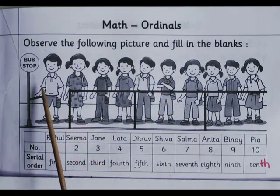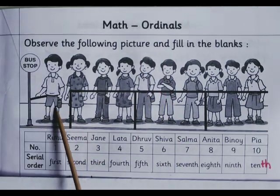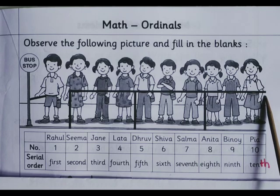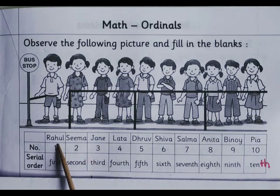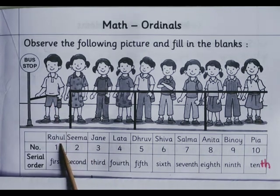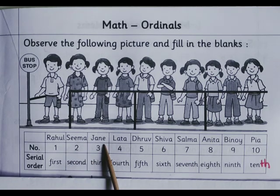Let us see — this is a bus stop. Here children are standing in a queue. Their names are: the first boy's name is Rahul, then Seema,